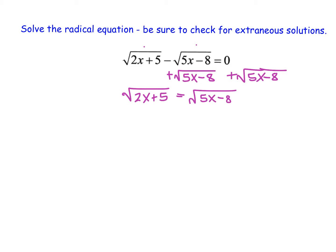We now have a square root on each side, and in order to undo a square root, we need to square each side. If we square each side, on the left the squared undoes the square root, giving us 2x plus 5, and on the right the squared also undoes the square root, giving us 5x minus 8. Just by moving that one square root over and squaring both sides, we were able to undo both square roots simultaneously.